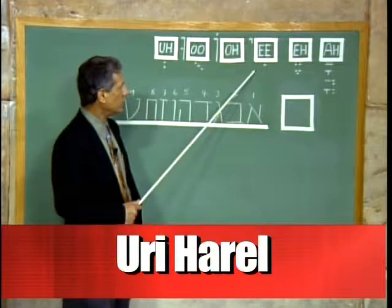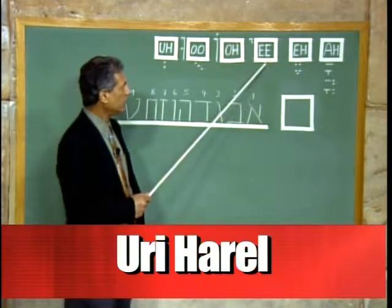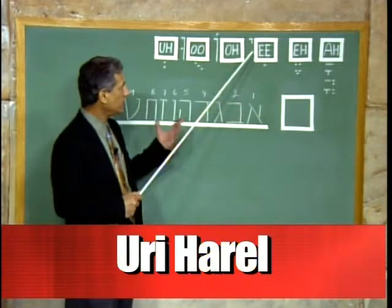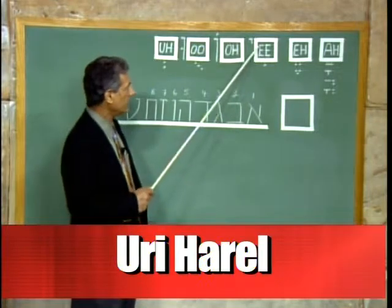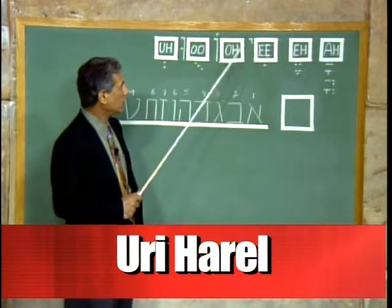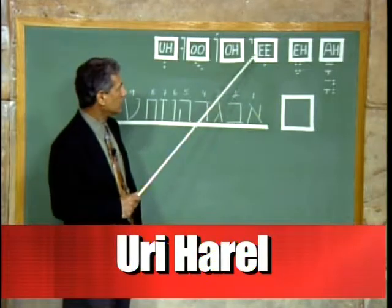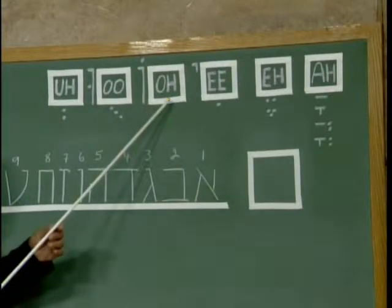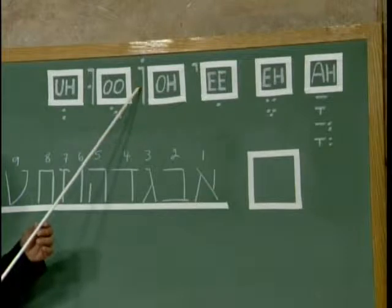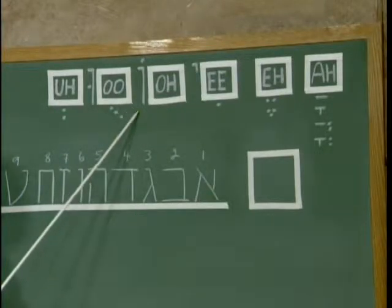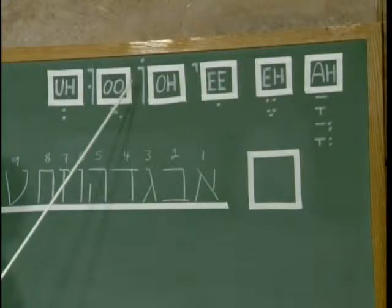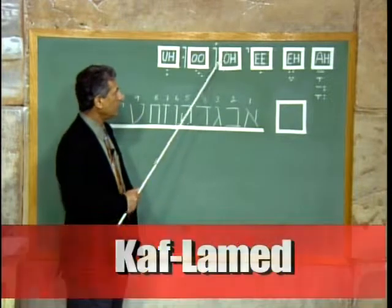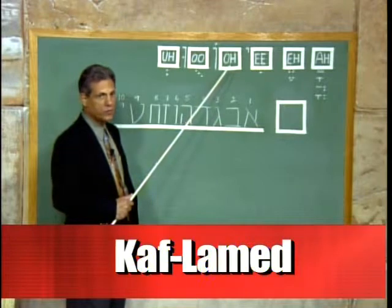Here is the 'e' sound: a dot under the letter, or a letter with a yud next to it. The yud is the tenth letter of the alphabet — it's the smallest letter and is used occasionally for helping the grammatical sounds. Here is the 'e' sound; here is the 'o' sound: a letter with a vav next to it and a dot on top. The vav is the sixth letter of the alphabet. A letter and a vav with a dot on top will give you an 'o' sound. Sometimes it will be just a dot on top — that will give you an 'o' sound.